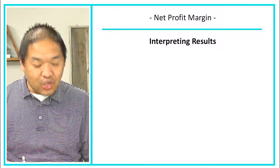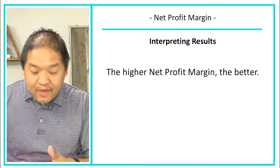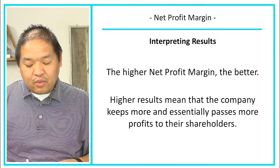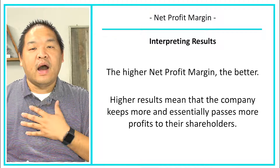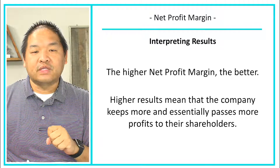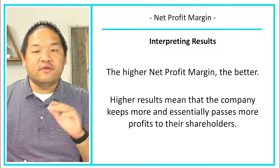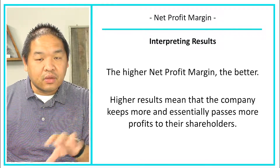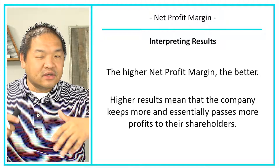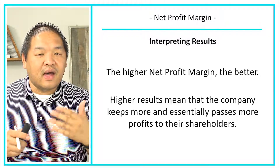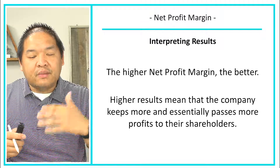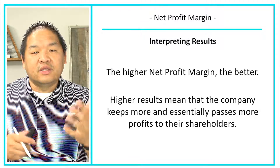How do we interpret those results? The higher the net profit margin, the better. Higher results mean that the company keeps more and essentially passes more profits to their shareholders. From a shareholder standpoint, I want to see high profit margins relative to their peer group. For example, I wouldn't expect a grocery store to do more than three to four percent — that's usually their range. But if they're doing 50 percent, that would raise a red flag because grocery stores have a low margin.